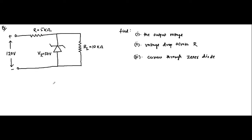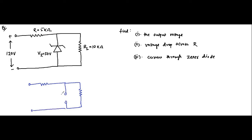The first step in analyzing any zener diode circuit is to determine the state of the diode. To do this, we remove the zener diode and assume it is open-circuited. Then we determine the voltage across those two terminals using the remaining circuit.